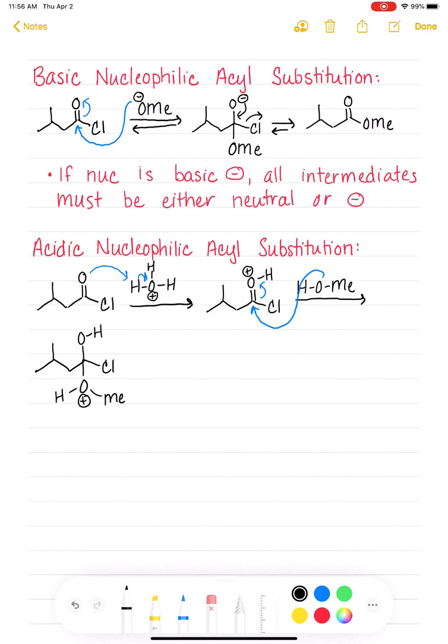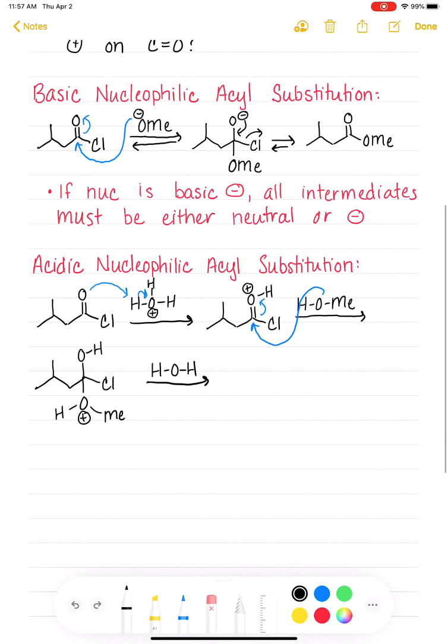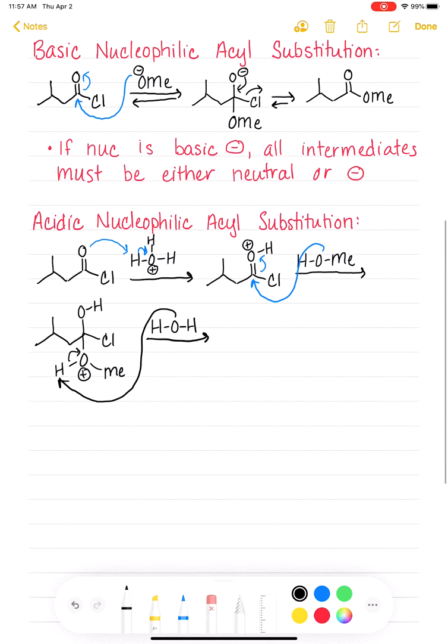Our next step is to address the positive charge on the oxygen. So we're going to use something else. Like for example, we could use the water molecule that was created when we did the very first step, this step up here, we created a water molecule. So we're going to use that water molecule and we'll use that to deprotonate. And this will take care of the positive charge on the oxygen.